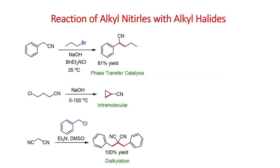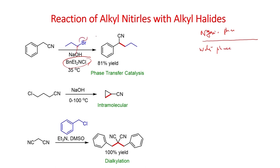So far we have seen the reactions of 1,3-dicarbonyl compounds, ketones, amino acids, and carboxylic acids. Now let us look at other related compounds. This reaction shows the alkylation of alkyl nitrile — benzyl nitrile — with n-propyl bromide in the presence of sodium hydroxide. They have carried out the reaction in the presence of an ammonium salt, which acts as a phase transfer catalyst in this reaction. This reaction is to be carried out in a biphasic system — organic phase and water.